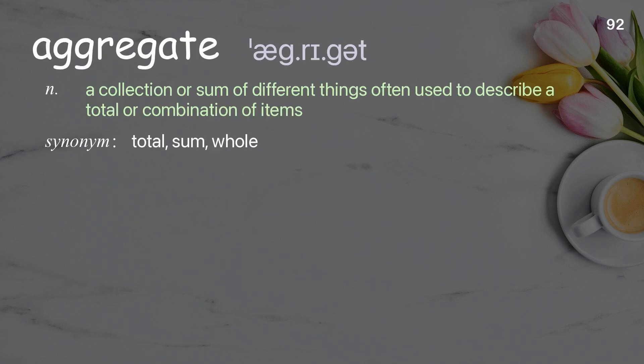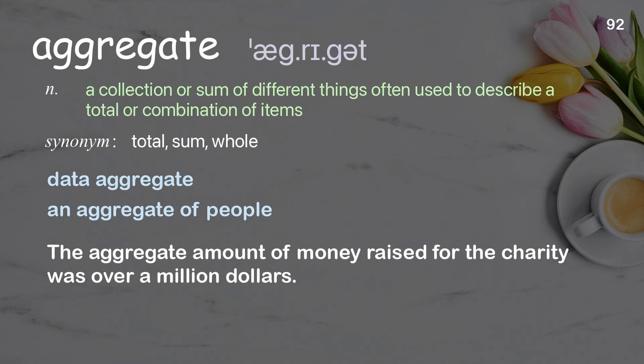Aggregate: a collection or sum of different things, often used to describe a total or combination of items. Examples: data aggregate, an aggregate of people. The aggregate amount of money raised for the charity was over a million dollars.